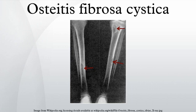Osteitis fibrosa cystica is the result of unchecked hyperparathyroidism, or the overactivity of the parathyroid glands, which results in an overproduction of parathyroid hormone. PTH causes the release of calcium from the bones into the blood, and the reabsorption of calcium in the kidney. Thus, excess PTH in hyperparathyroidism causes elevated blood calcium levels, or hypercalcaemia.